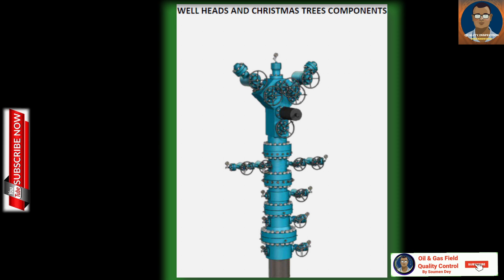A wellhead is necessary to control the pressure during drilling and production. Without a wellhead you cannot utilize a christmas tree, however you can use a wellhead without a christmas tree during drilling operations. Additional functions of the wellhead include allowing safe and controlled access to a live well, serving as a point to suspend casing and tube strings, and serving as a connection surface for pressure control equipment.